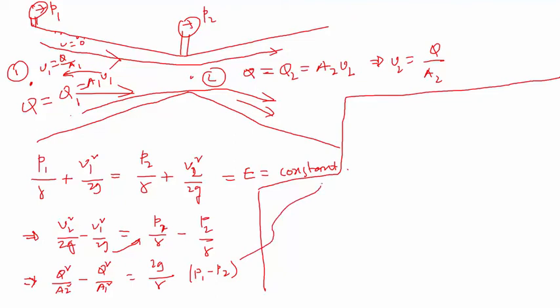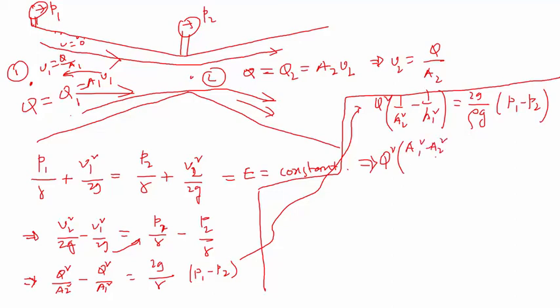I can write Q times one by A2 squared minus one by A1 squared is equal to 2g for gamma. I can write rho g, that's gamma, and then P1 minus P2. I forgot to square them, Q squared. So I can write Q squared times A1 squared minus A2 squared divided by A1 times A2, both squared, is equal to 2 by rho P1 minus P2.